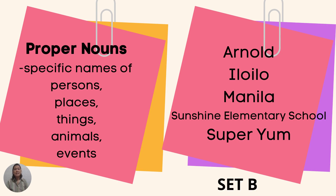While Set B are all proper nouns. Let's read the words in Set B. Arnold, Iloilo, Manila, Sunshine Elementary School. When we say proper nouns, they are specific names of persons, places, things, animals, or events.